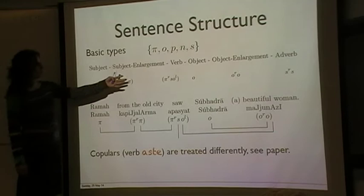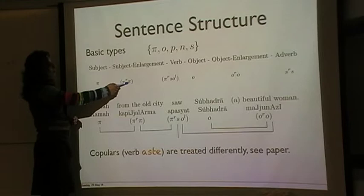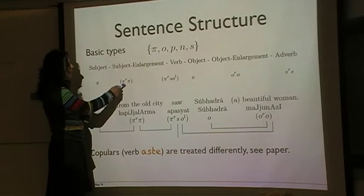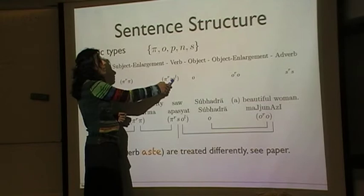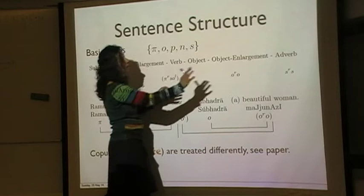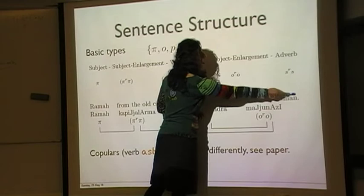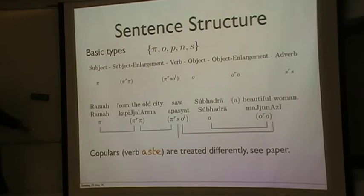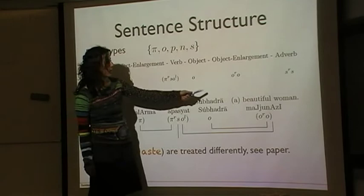So if we then assign the type pi to the subject. Because the subject enlargement is to the right hand side of the subject and modifies it, we're going to assign the type pi r pi to it. So then the subject will be first fed to subject enlargement. And then the result of this is going to be fed to the verb which has the type pi r s ol, ol standing for the object. So then the object is also going to be fed to the object enlargement, et cetera. At the end the S that comes out here is going to be fed to the adverb which is going to modify it and produce the final result. And here is an example. So Rama from the old city, that's the enlargement. And saw Subhadra and the beautiful woman. Which is a higher term.